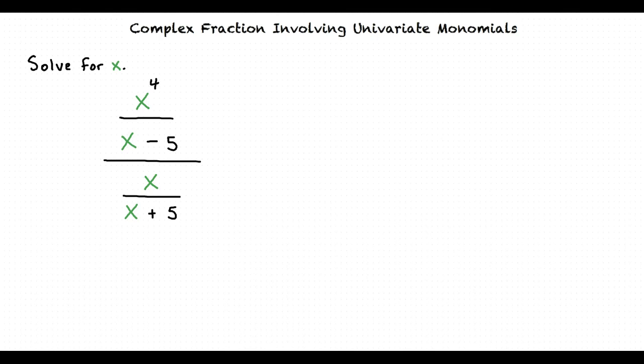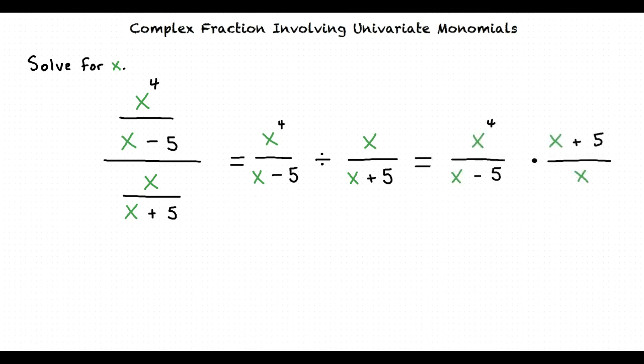We can begin by rewriting the complex fraction as a division problem. The result is x to the 4th over x minus 5, divided by x over x plus 5. Whenever we divide by a fraction, instead we multiply by the reciprocal of that fraction. The reciprocal of the fraction we are dividing by is x plus 5 over x, so the result would be x to the 4th over x minus 5, times x plus 5 over x.